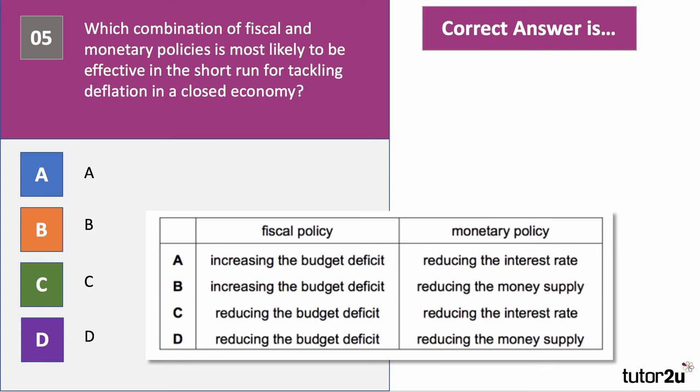Question five: which combination of fiscal and monetary policies is most likely to be effective in the short run for tackling deflation in a closed economy? The country doesn't trade and has deflation — which combination of policies is most likely to tackle that?